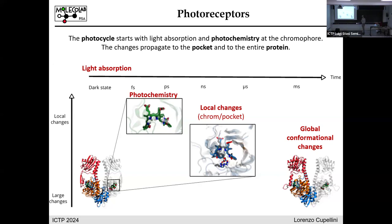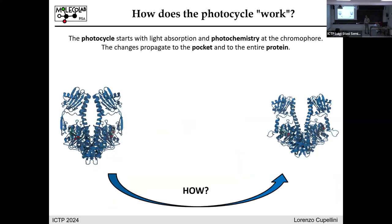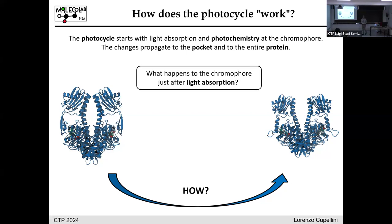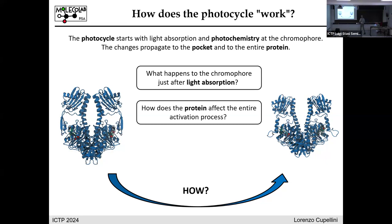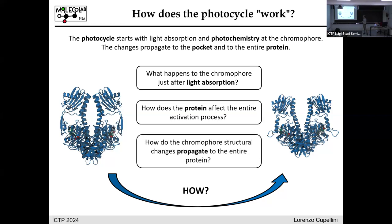The challenge is that we need to describe processes across very different length scales and time scales — from the photo cycle starting with photon absorption and chromophore photochemistry, propagating to the protein pocket on picosecond to nanosecond timescales, and then conformational changes propagating to the entire protein. One question is what happens to the chromophore just after light absorption. Another is how the protein is coupled to the chromophore and affects the activation process. Different methods must be integrated to answer all of these.